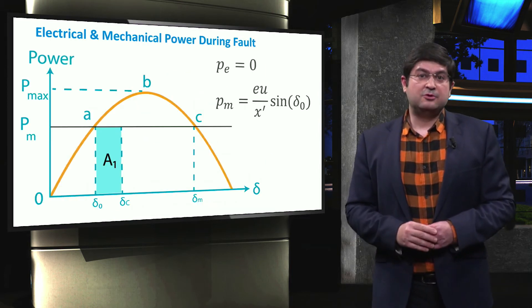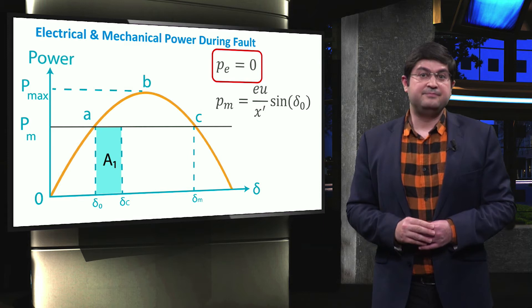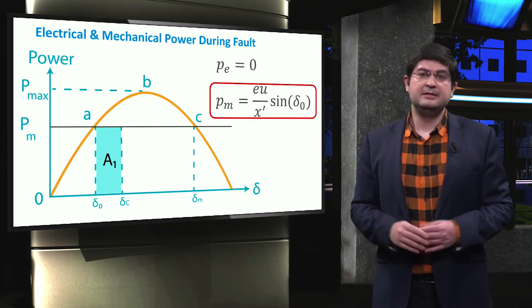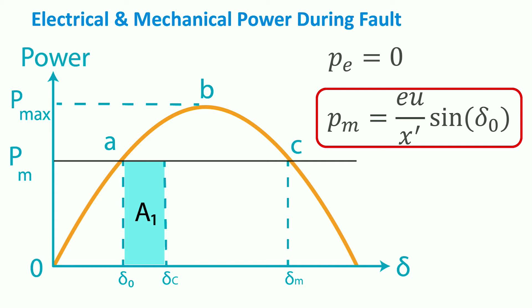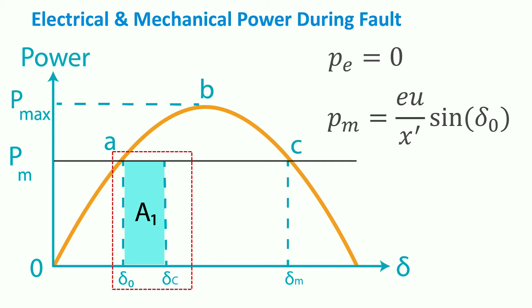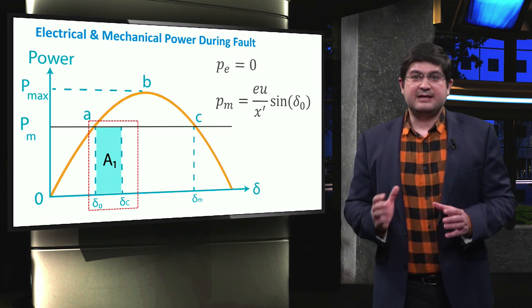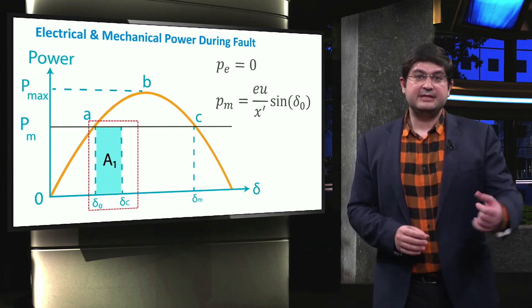During the fault, though the electrical power is zero, the input mechanical power remains constant. This means that all the input mechanical energy will be stored in the rotating mass of the machine, and as a result, the rotor angle starts to increase from delta 0 to delta C. In other words, during the fault period, the rotor is in the accelerating mode, where area A1 represents the amount of electrical energy stored in the rotor shaft. We assume that at delta C, the fault is cleared.